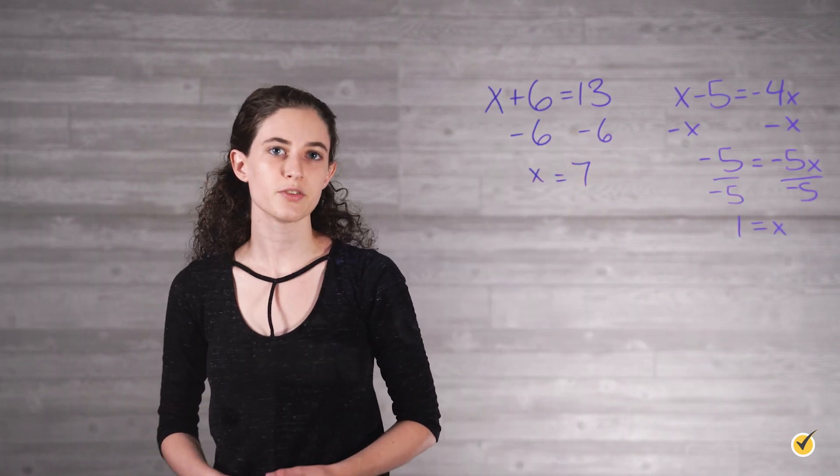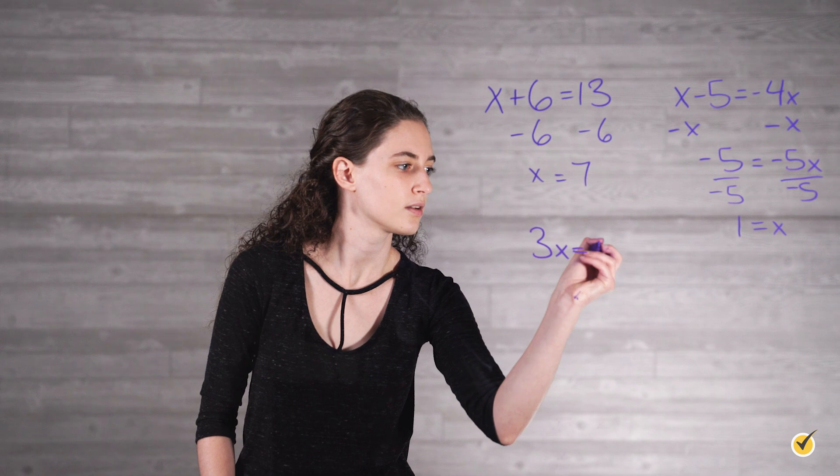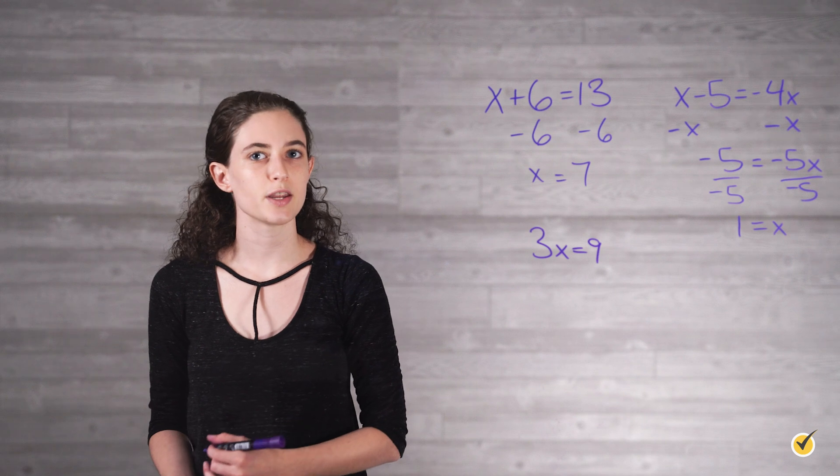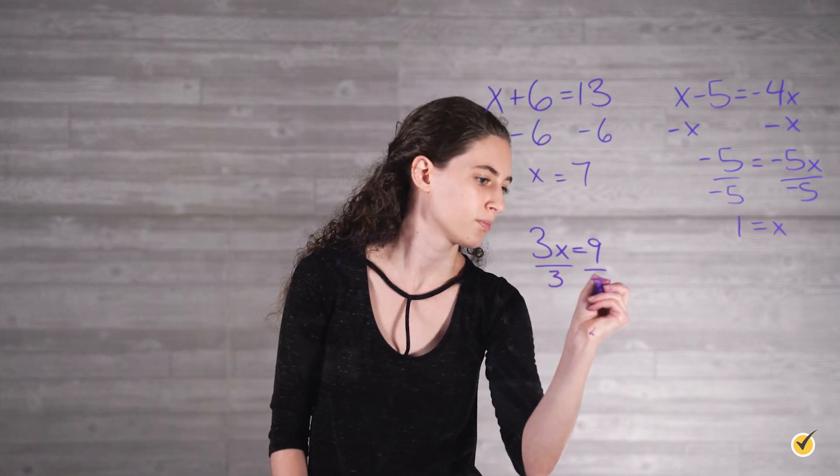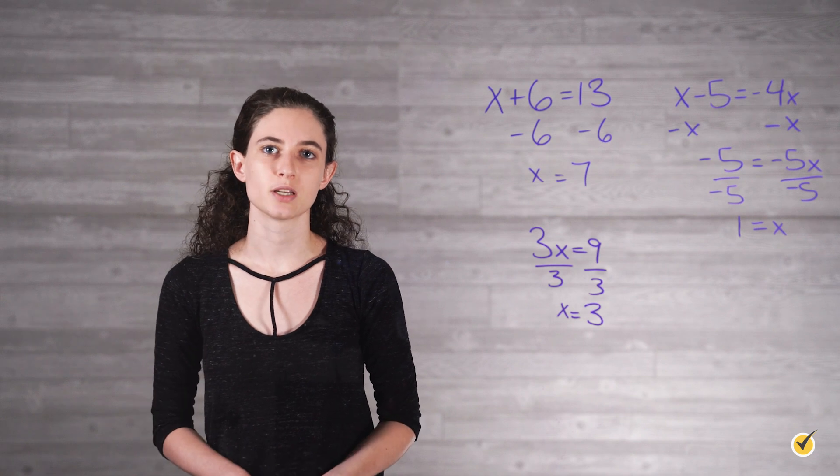With multiplication and division, the goal is to make a 1. In the equation 3x equals 9, we need to make that 3x into a single x by dividing both sides by 3. Since 3 over 3 equals 1, we were able to solve the equation.